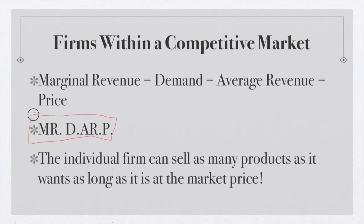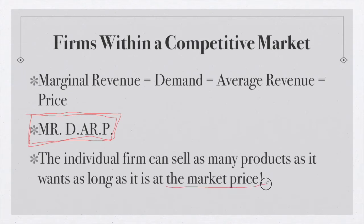You can remember this with the handy acronym Mr. DARP. For the competitive firm, they can sell as many of their products as they want because competitive firms are very small relative to the market, as long as they sell them at the market price. They can sell as many products as they want provided they sell at the actual market price of the good.